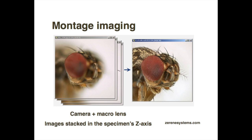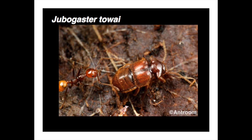This has really changed recently with the advent of montage imaging. In montage imaging, you get your camera with a really powerful macro lens and take multiple images going through the specimen's Z axis — starting at the top and working through the specimen. Using a montage algorithm, you project all of these images together and filter out the parts which are out of focus, producing a montage picture where all parts of the insect are now in view. This has really transformed species descriptions — taxonomic journals now are full of these montage images.